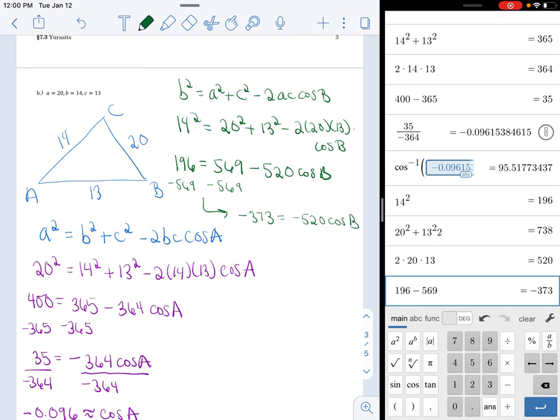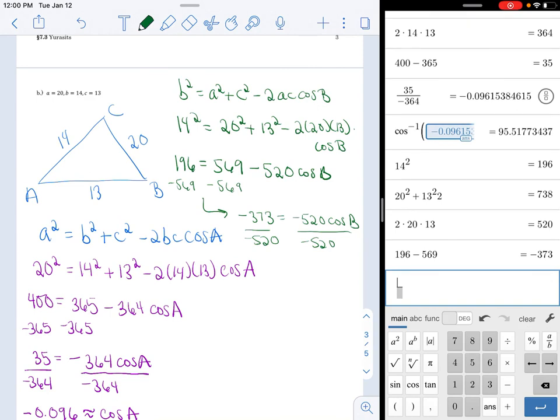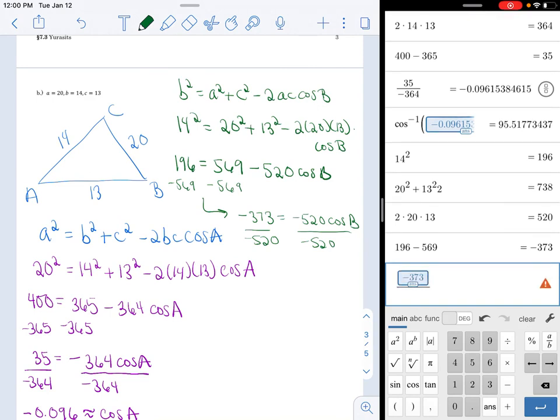Watch those negatives. I have to divide by negative 520. So divide answer by negative 520. So I get a positive. Let's go ahead and just block that out. So I get 0.72. Again, I'm just rounding on my paper.